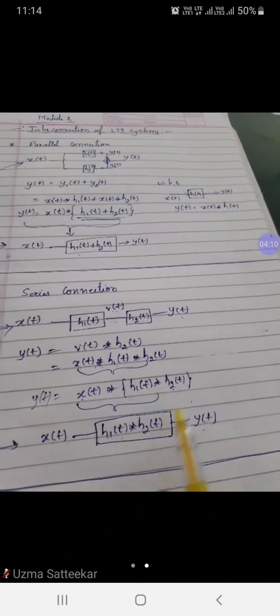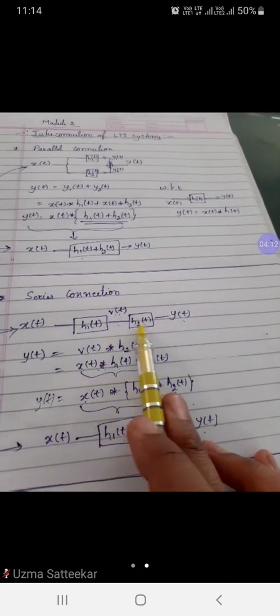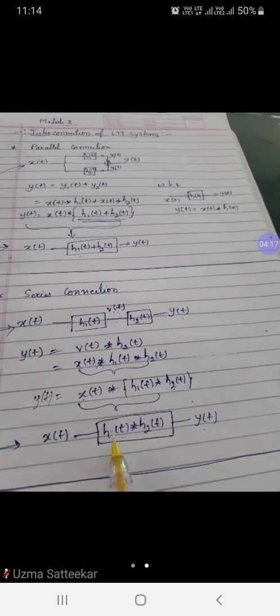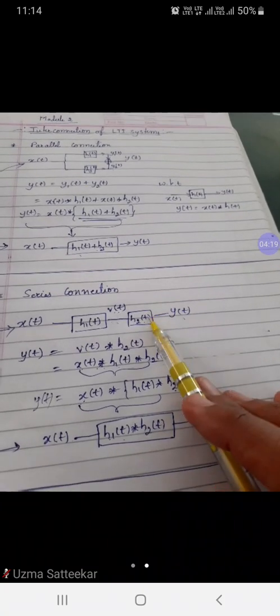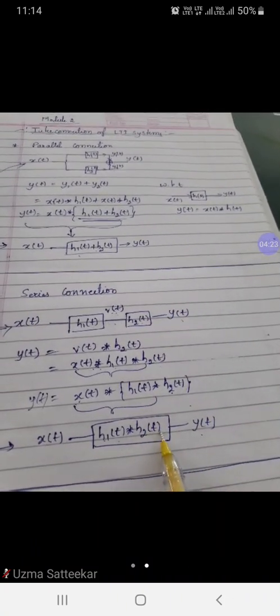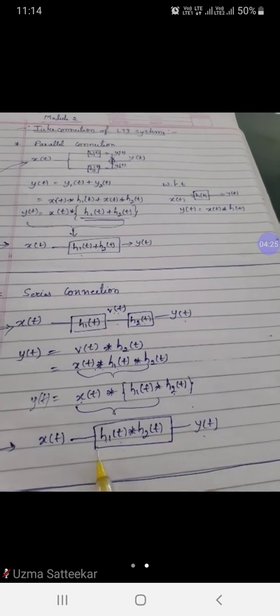Here, x is the input, y is the output, and whatever is in the bracket is the impulse response. So whenever you have a series connection—h1 and h2 connected in series—it is replaced by h1 convolved with h2. If you have one more, say h3, in series, then convolve with h3.